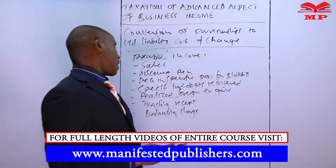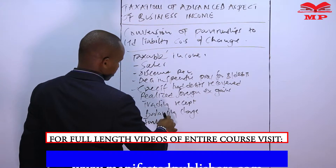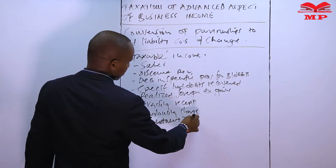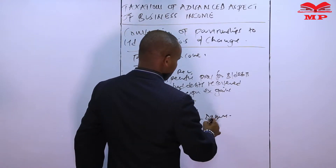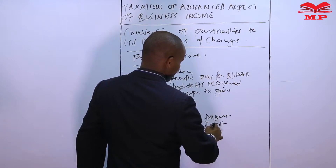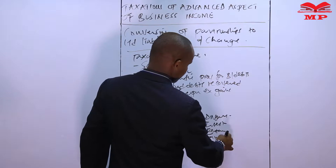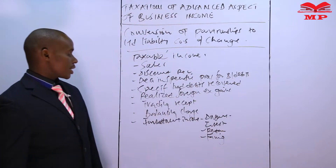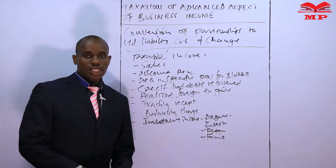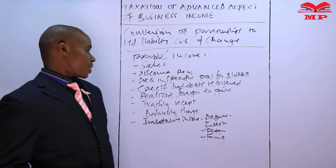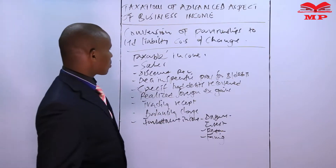Another major taxable income is investment income. This includes dividends, interest, rental income, and farming income. All those incomes generated by the partnership are supposed to be subjected to tax and included as part of taxable incomes.